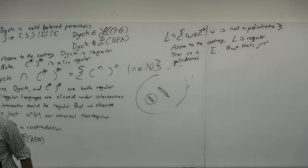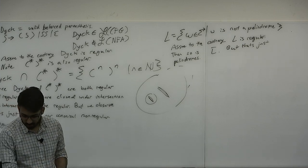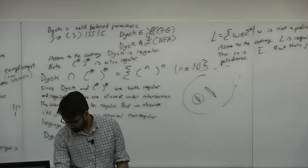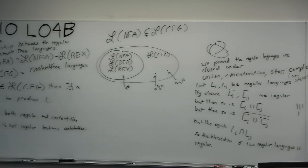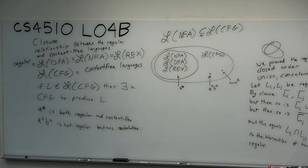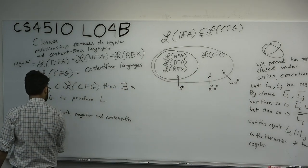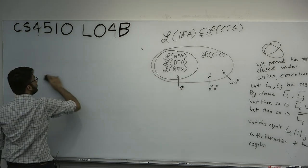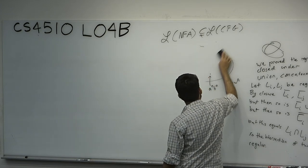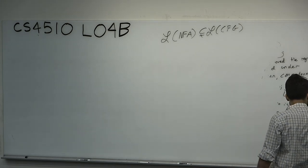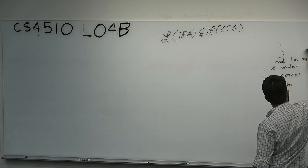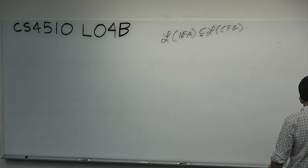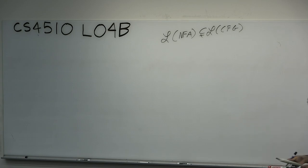Now let's prove the main point of today: that every regular language is also context-free. There are two good proofs of this. I'm going to explain the hard, bad proof and then explain the easier, cooler proof.